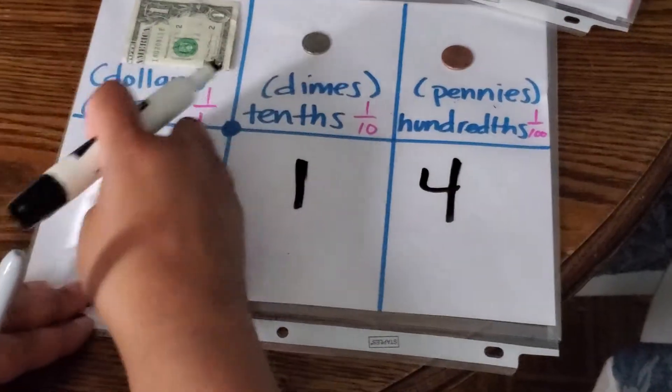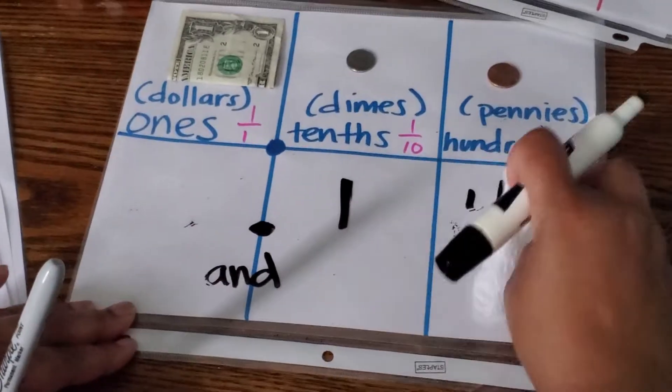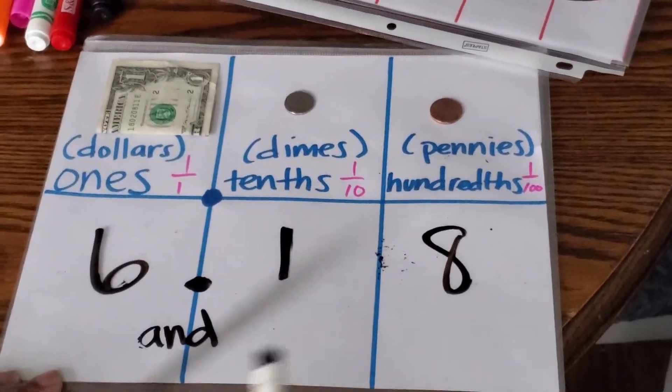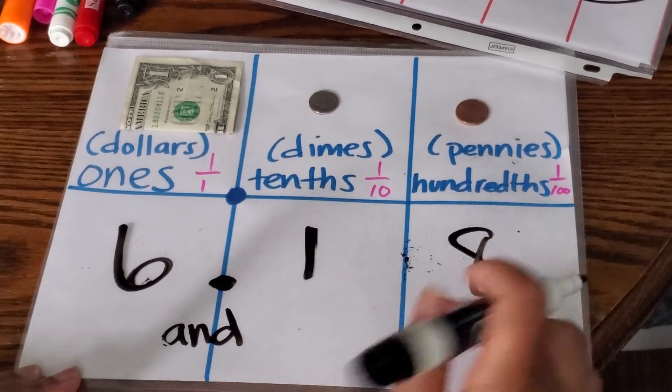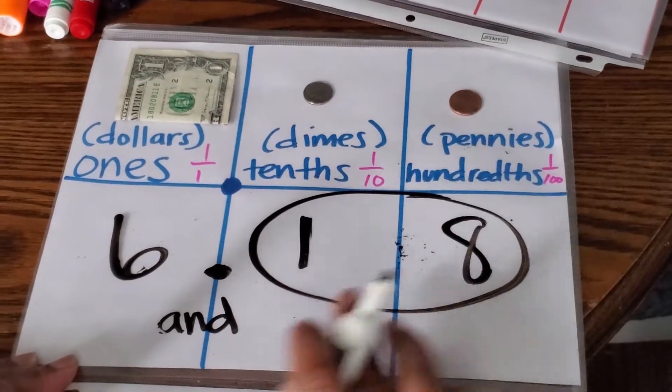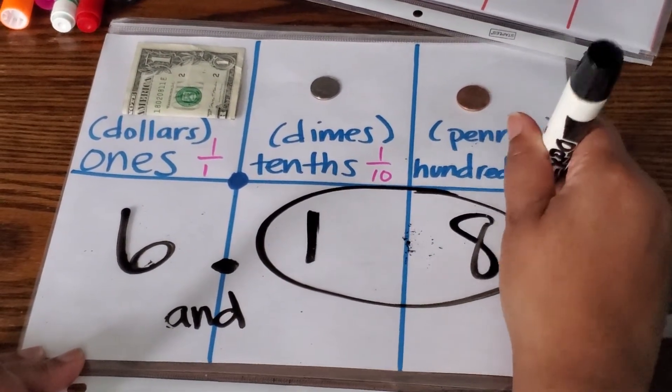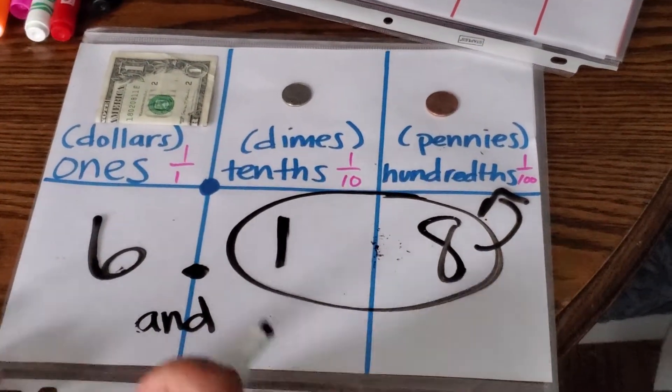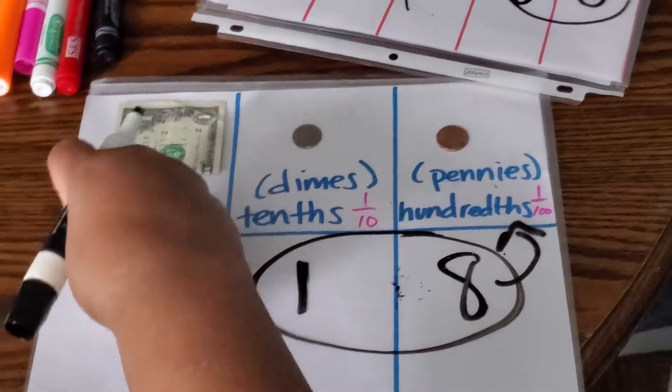Let's say you had a number like this. It would be six and eighteen hundredths. That's how you would say the number.